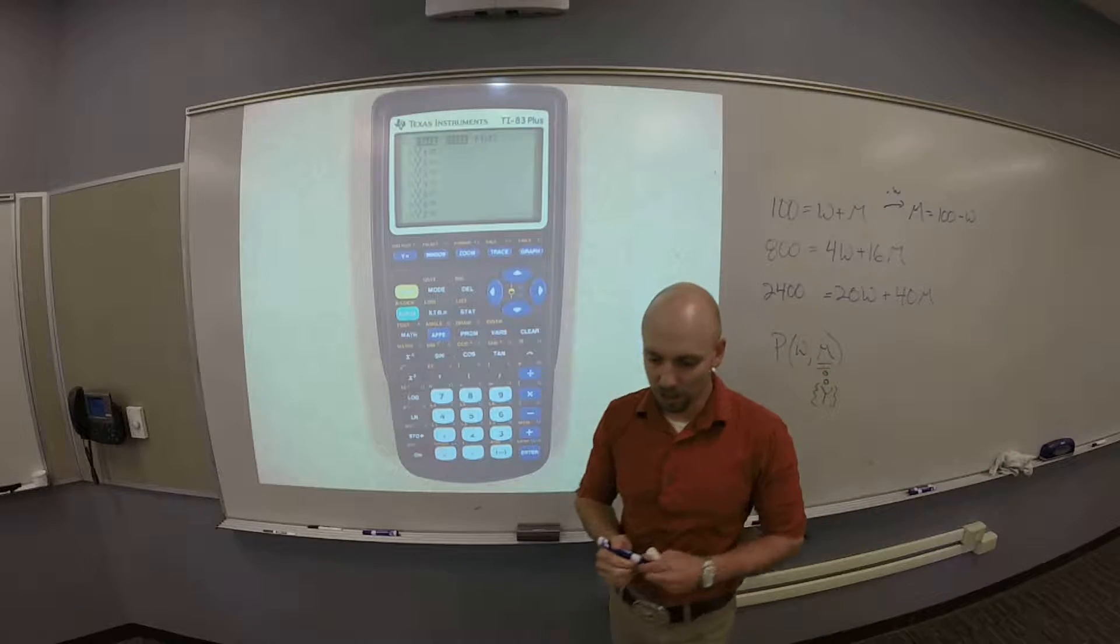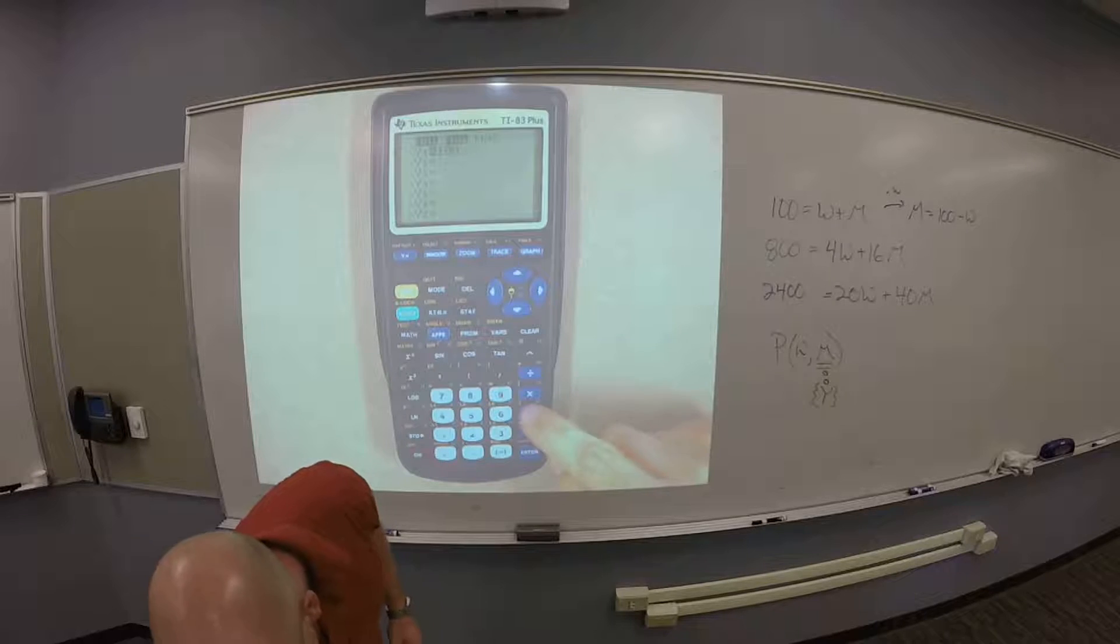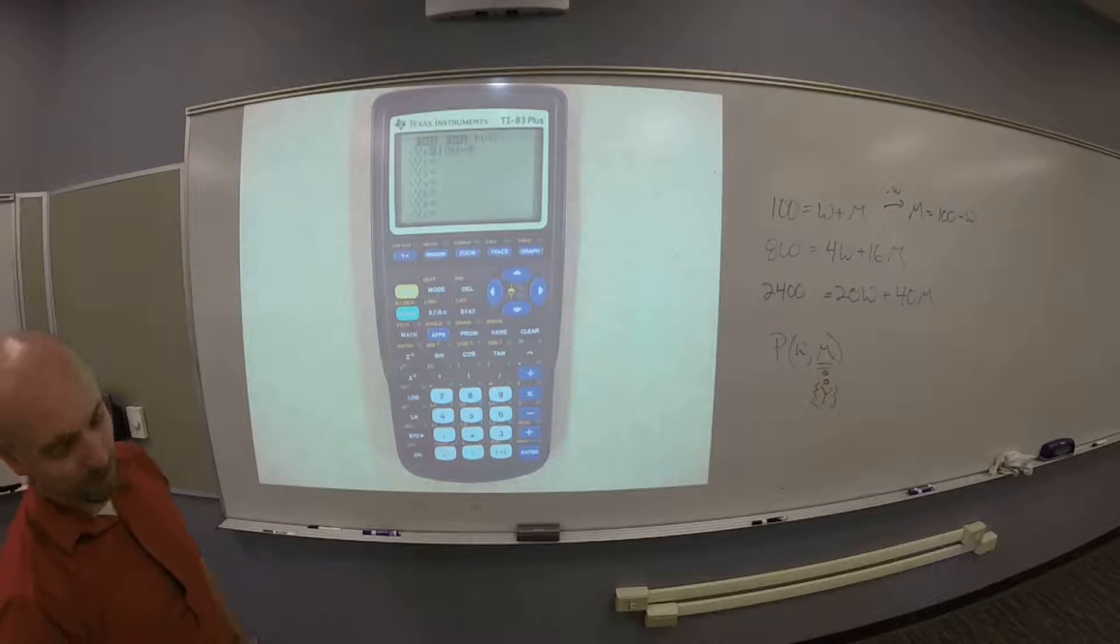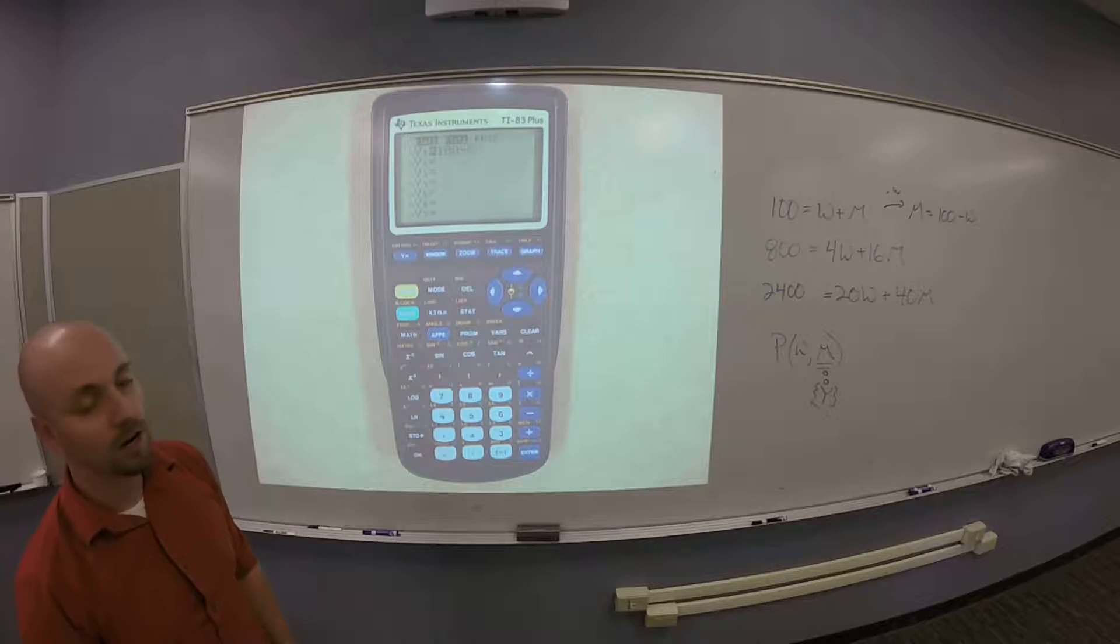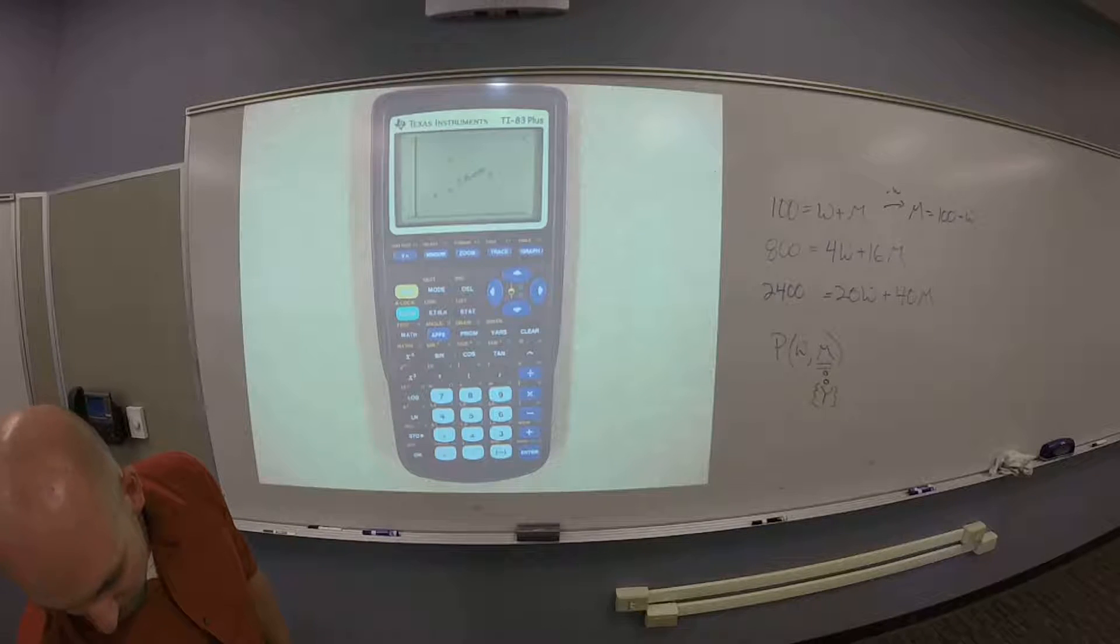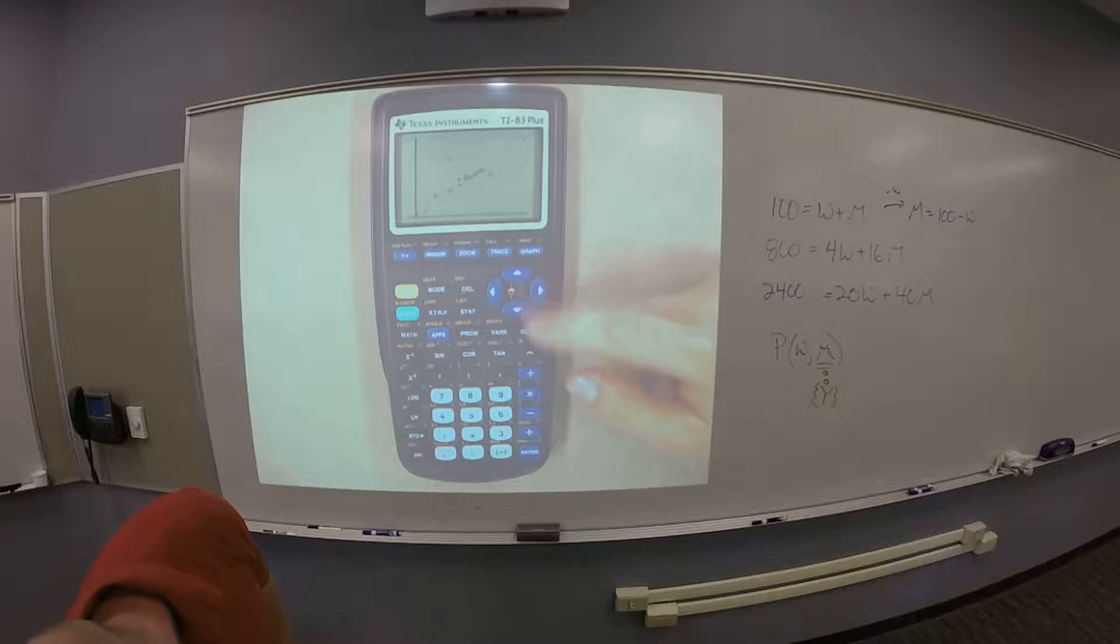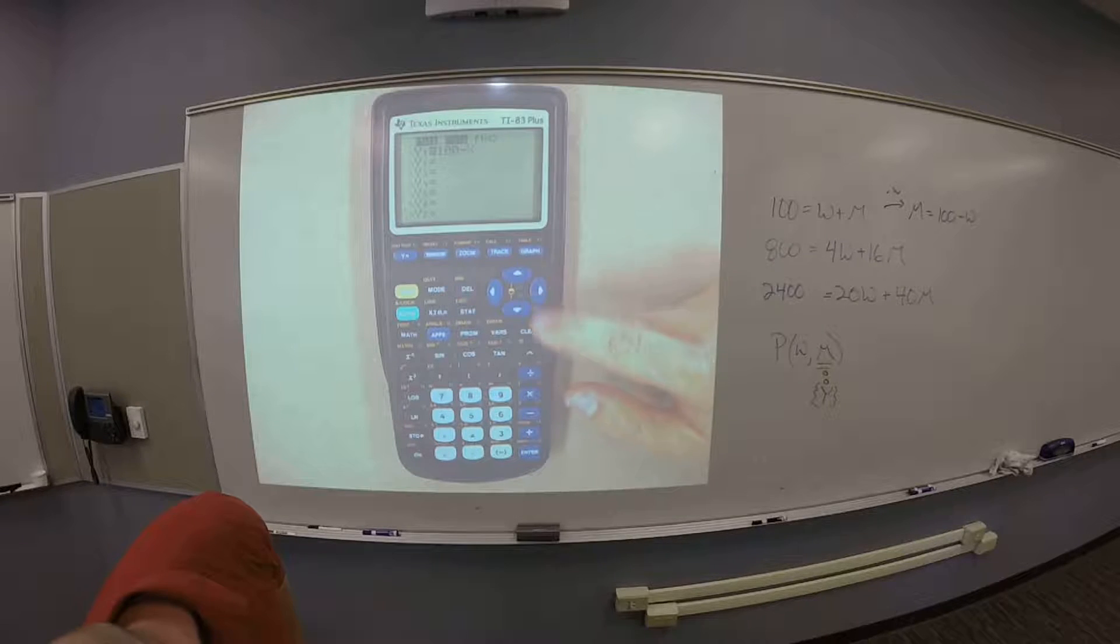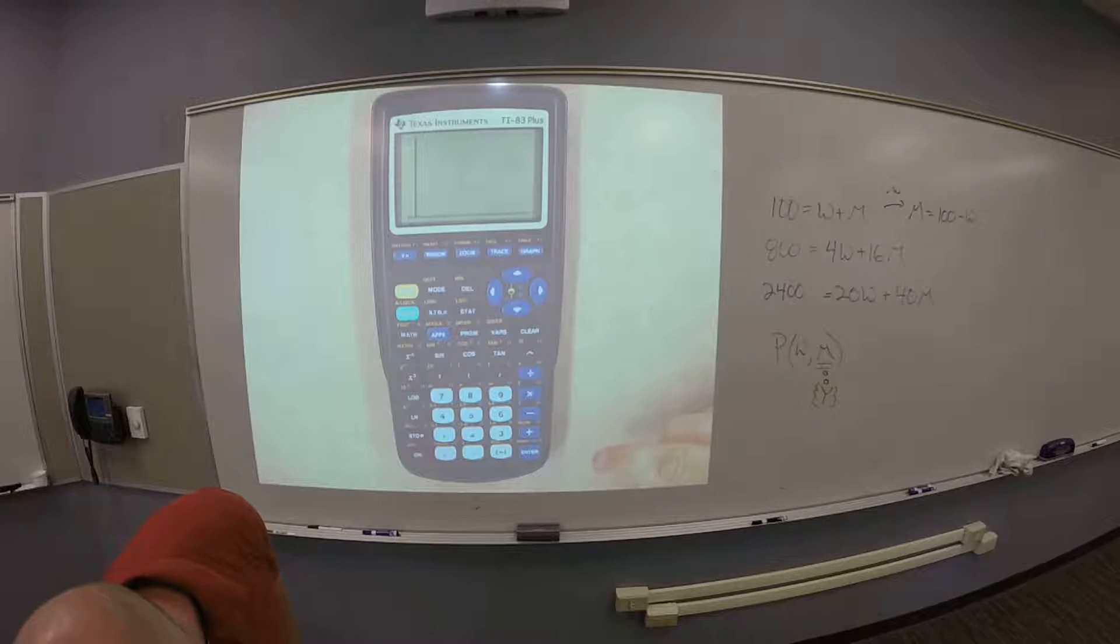I'm going to subtract W from both sides so I'm going to get M equals 100 minus W. So, on my calculator, I'm going to type in 100 minus what? X. And X is under this kind of generic variable button and then if I hit graph, oh God. Someone's got stats plot on. How do I get it out of that? Go back into Y equals, scroll to plot 1 and plot 2 and hit enter on the bottom one and then plot 1 as well.